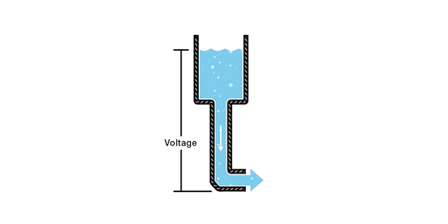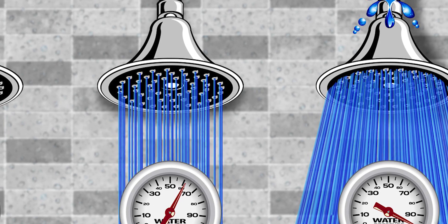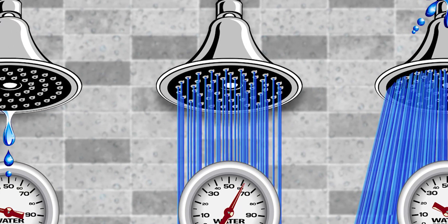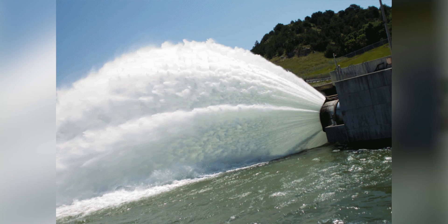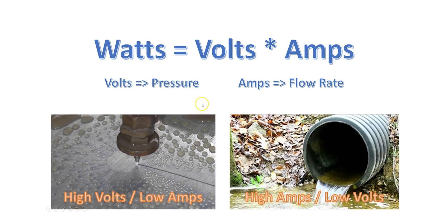If you put pressure on the pipe, that represents voltage. Voltage is what drives the current flow. When voltage is applied, current flows through the pipe. The power is voltage multiplied by current — voltage times amps equals watts. That's the power.